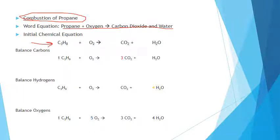You have to start with the initial equation and write everything out exactly the way it is. These are the chemical formulas and names. Start by putting one in front of the alkane. You can start with balancing the carbons — one times three gives three carbons, so you put three on the other side. For alkanes, the coefficient is going to be the subscript.